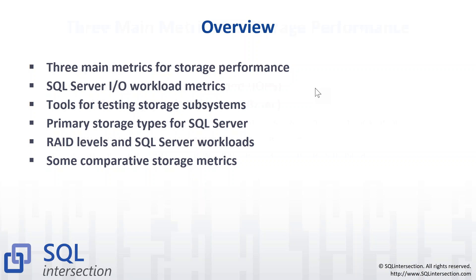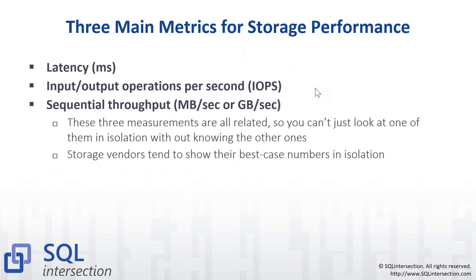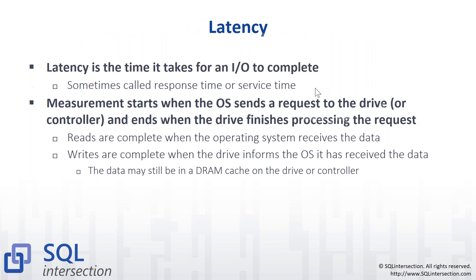The three main metrics for storage performance are: latency, which is usually measured in milliseconds; input-output operations per second, or IOPs; and then sequential throughput, measured in megabytes per second or gigabytes per second with a good system. These measurements are all related, so you can't just look at one without knowing what's going on with the others. Storage vendors tend to show off whichever one of those three makes their system look the best.